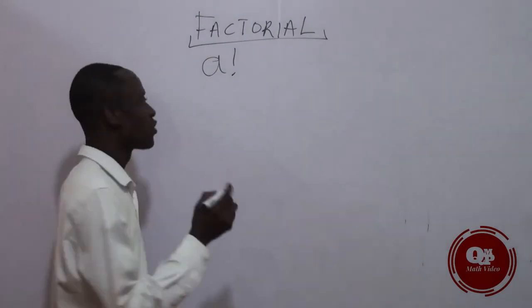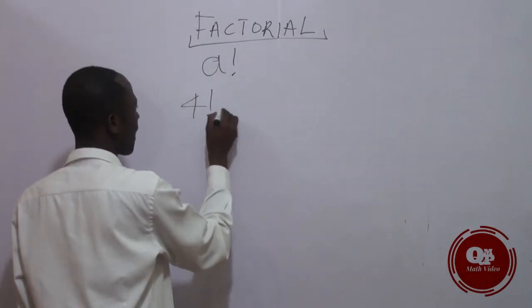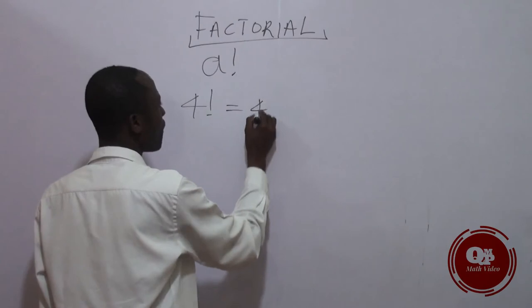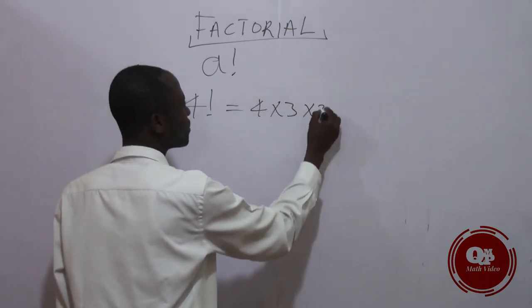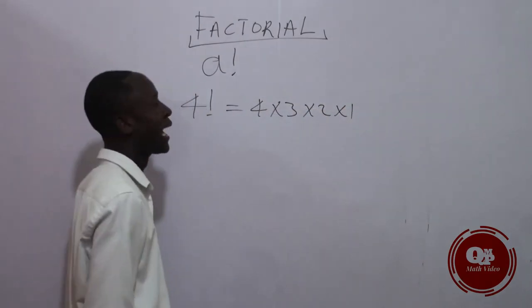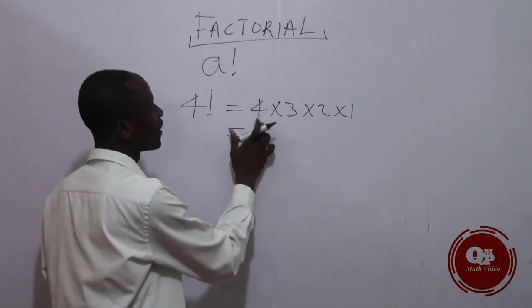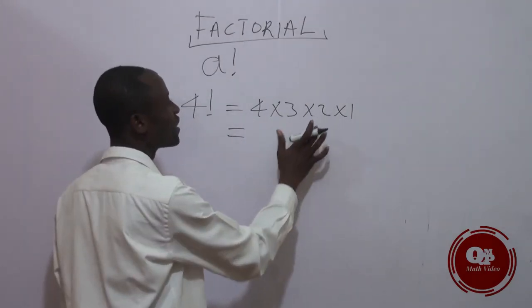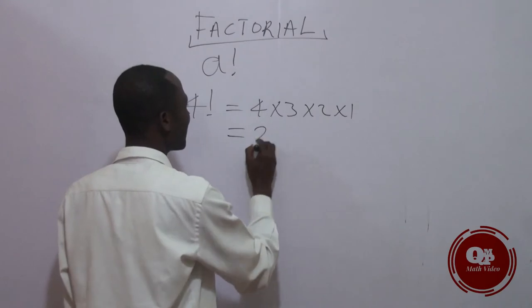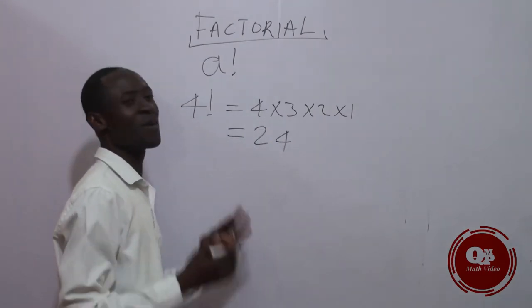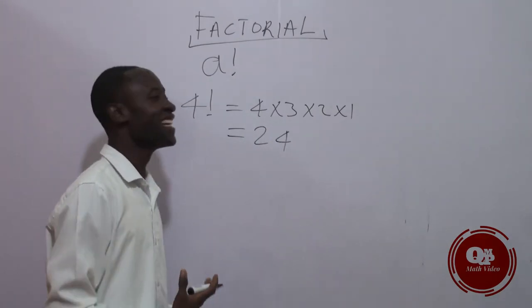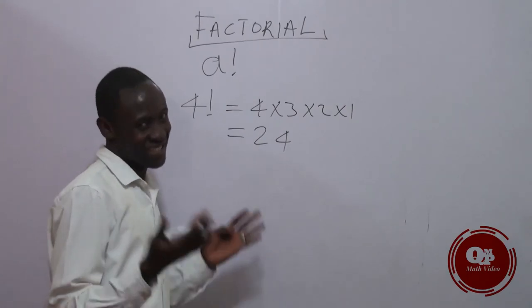Now, four factorial: four factorial equals four times three times two times one. Four times three equals twelve. Twelve times two equals twenty-four. It's beautiful.